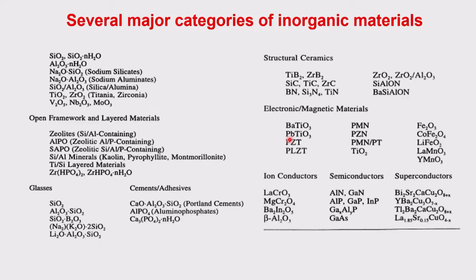Let us look at why solid state NMR is more demanding for inorganic compounds. Consider materials like SiO₂, Al₂O₃, zeolites, open-framework materials, layered materials, glasses, cements, calcium oxide, silicon oxide, aluminum oxide, ceramics containing titanium and zirconium with other oxides, electronic and magnetic materials with spin-changing and electron-transport properties — these can be lanthanide-based or transition-metal-based — as well as ion conductors, semiconductors, and superconductors.